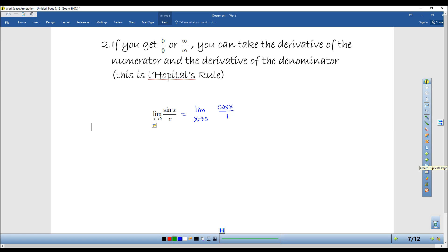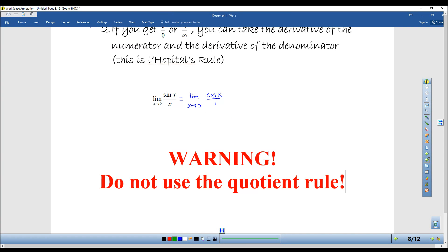So I start the problem over and I take the derivative of the numerator, which is cosine, and the derivative of the denominator, which turns out to be one. And I do want to make one quick note here: you must not use the quotient rule. You are strictly taking the derivative of the numerator and strictly the derivative of the denominator, which is different probably from everything else you've learned.